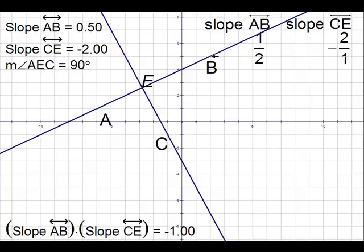Now, notice at the bottom left of Sketchpad, I've asked Sketchpad to multiply the slopes of line AB and CE together. We get an answer of negative 1.